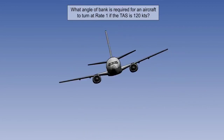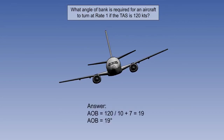Another rule of thumb formula, which has a very practical use, gives us the required angle of bank for a rate one turn at any given true airspeed. The formula is: angle of bank equals TAS divided by 10, plus 7. So, assuming a true airspeed of 120 knots, the angle of bank equals 120 divided by 10, plus 7, which is 19. Therefore, 19 degrees is the required angle of bank for a balanced rate one turn at 120 knots.